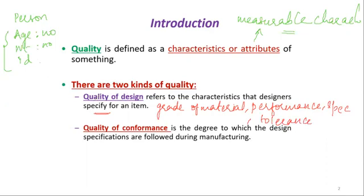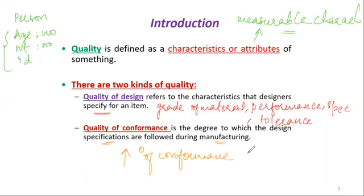Quality of conformance has to do with the degree to which design specifications are followed during manufacturing — that is, what specifications you are following while producing that particular software. The greater the degree of conformance, the higher the level of quality of conformance. If the degree of conformance is high, then the quality of that product and the quality of conformance are also high.